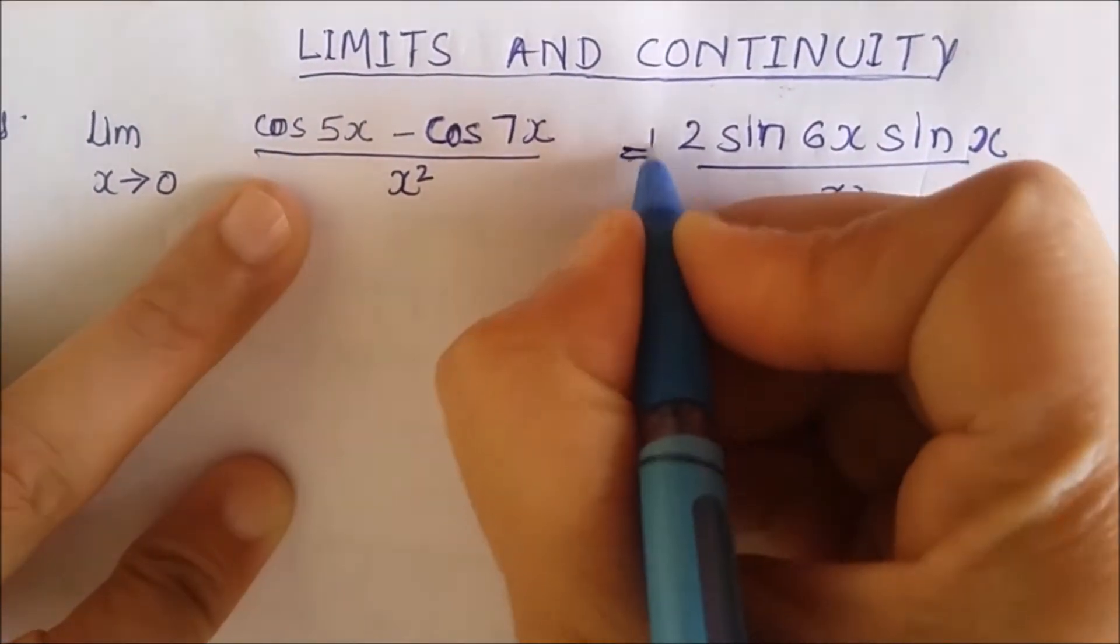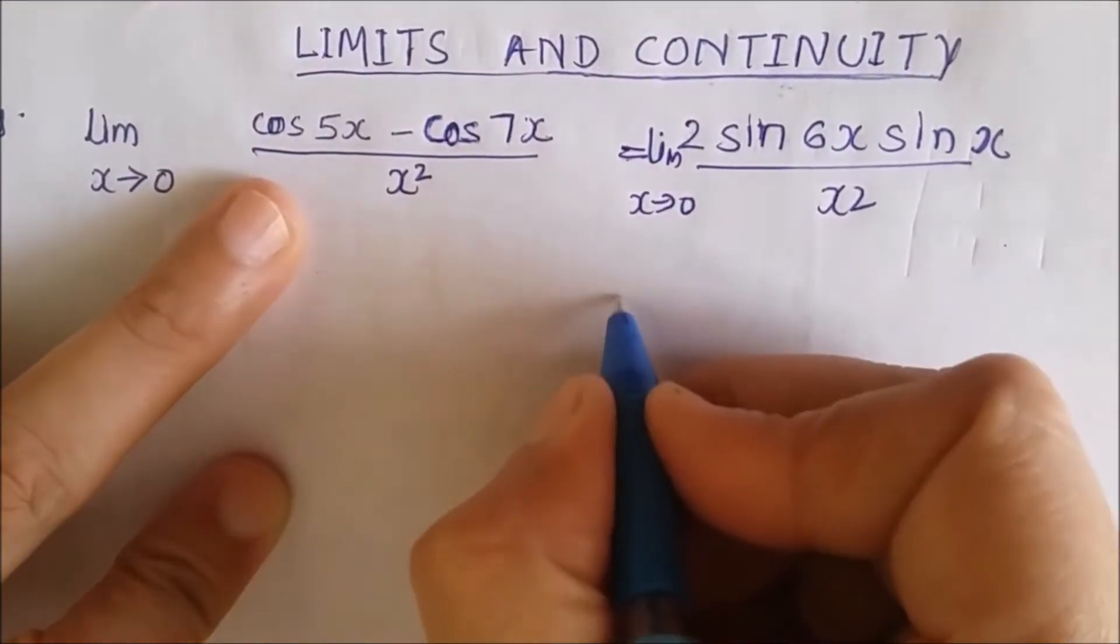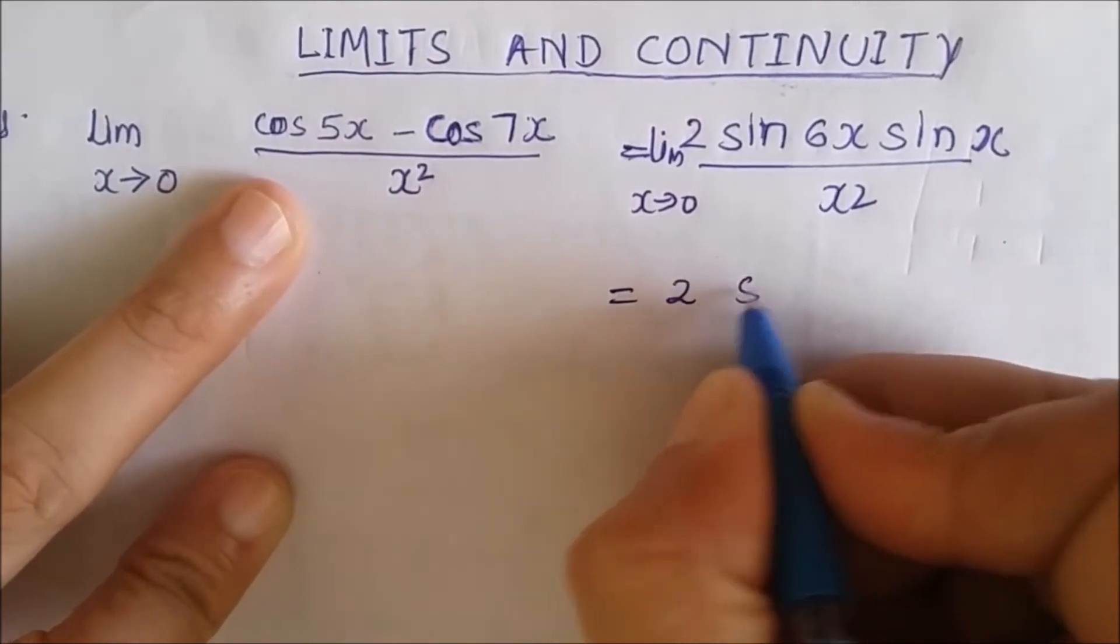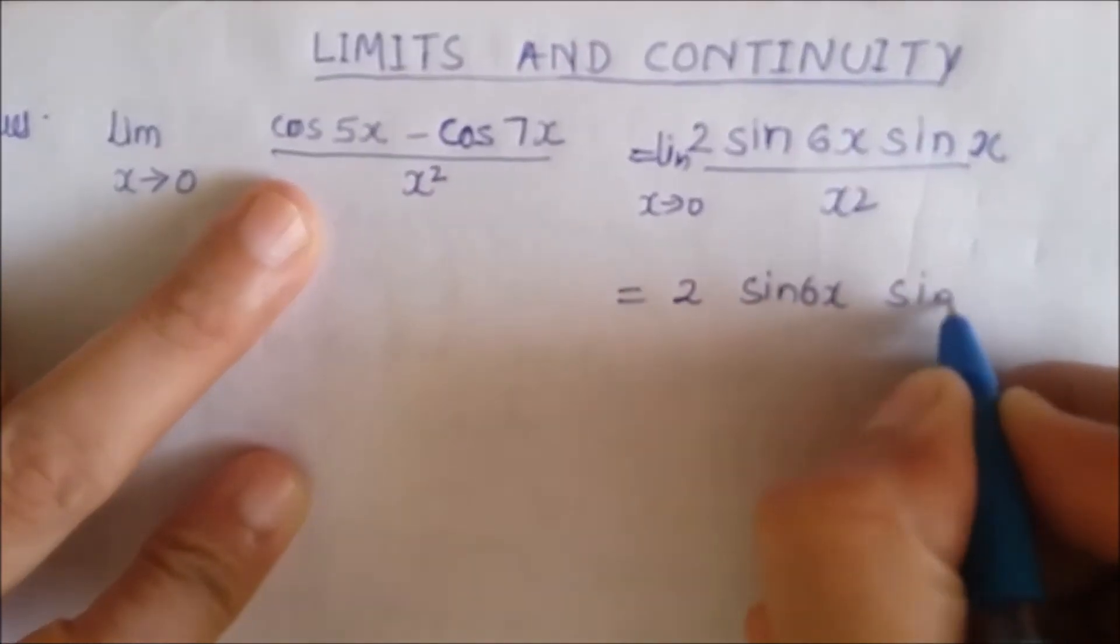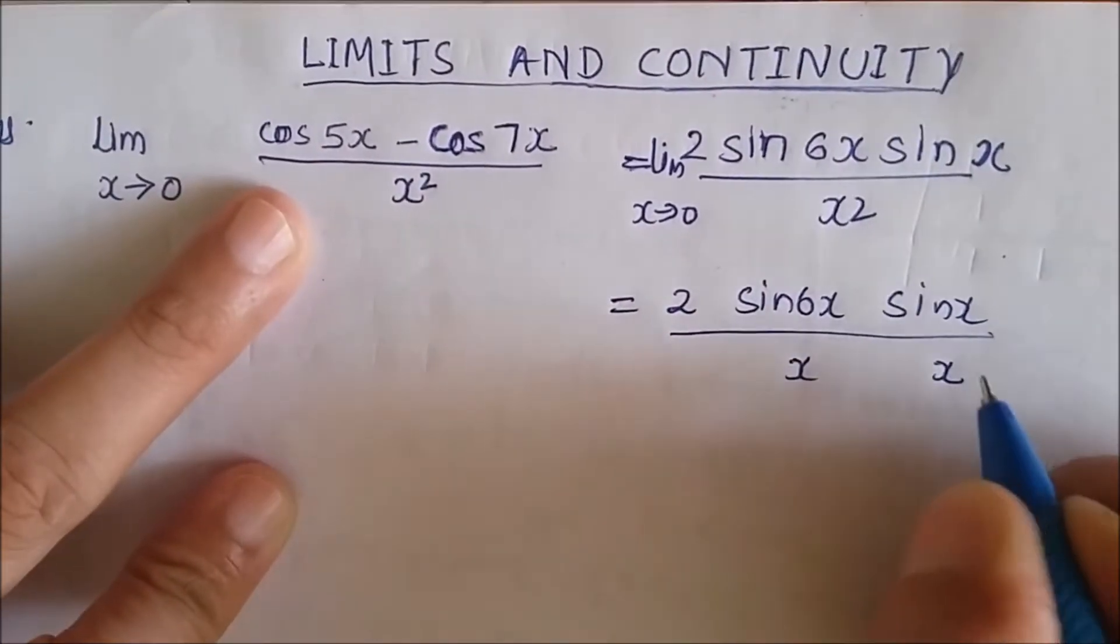So this can be written as 2 times sin 6x, I will write this as sin x. I will separate these x square, 1x here and 1x here, so that I can put the limit easily.